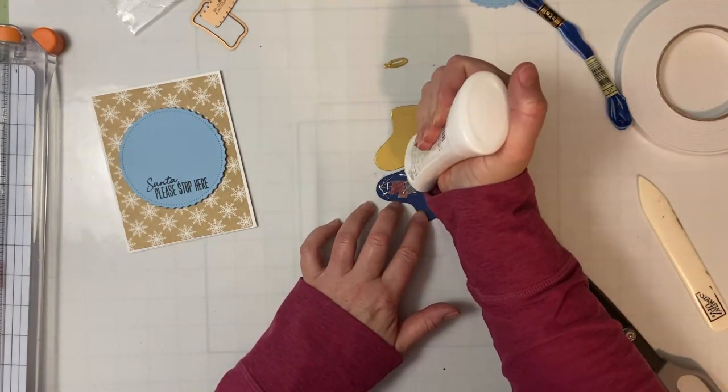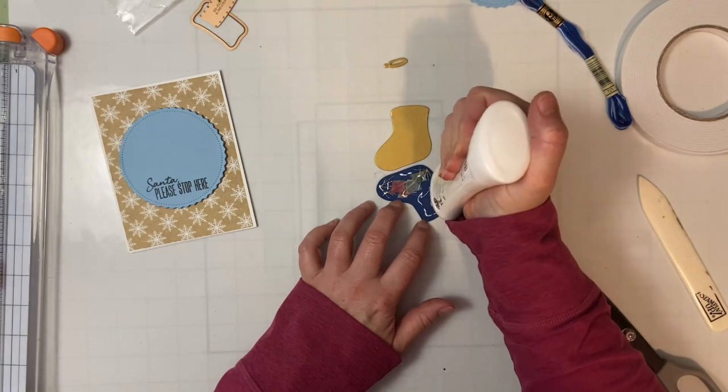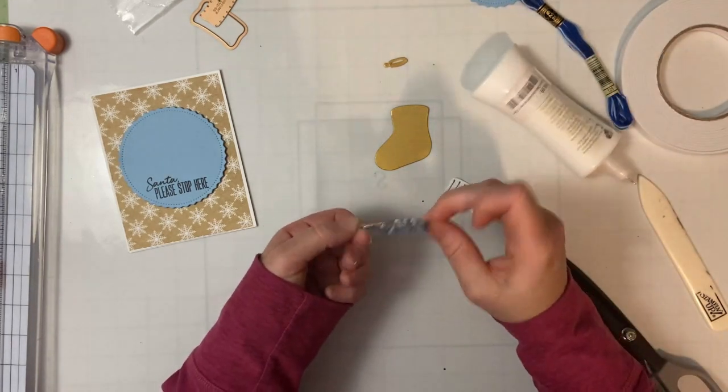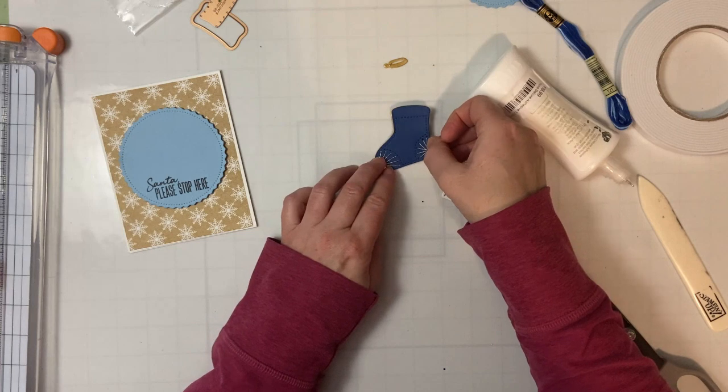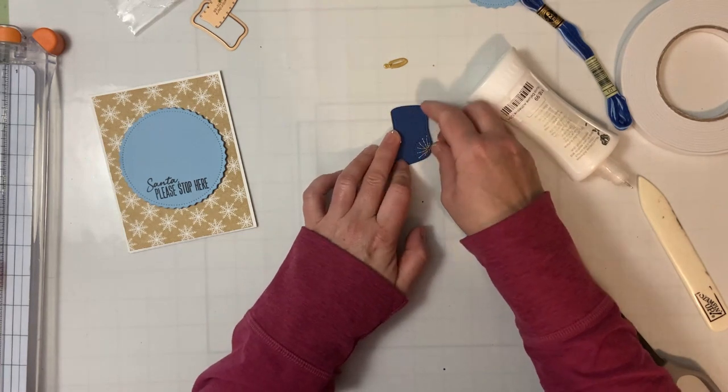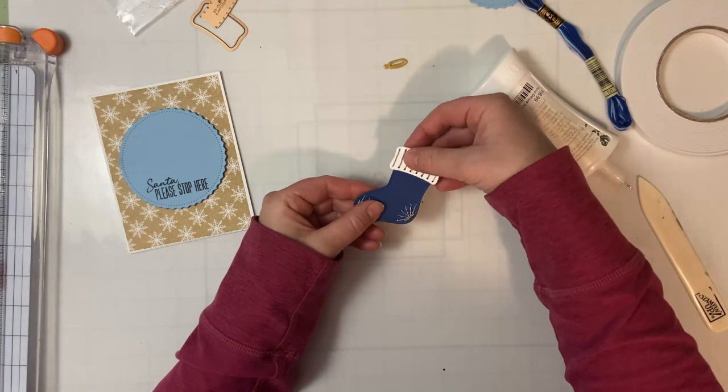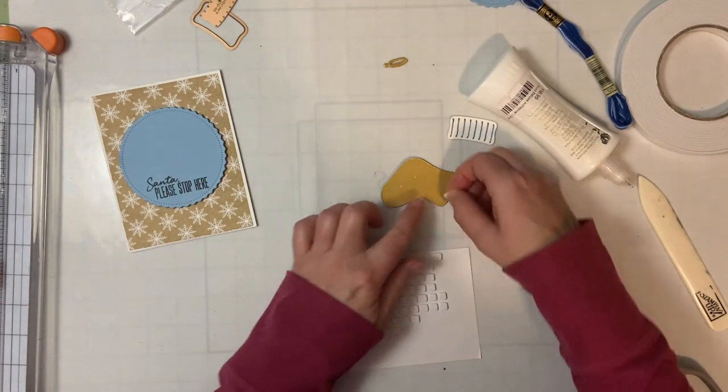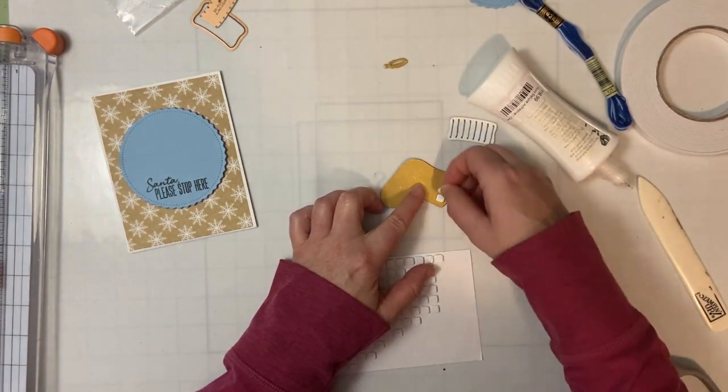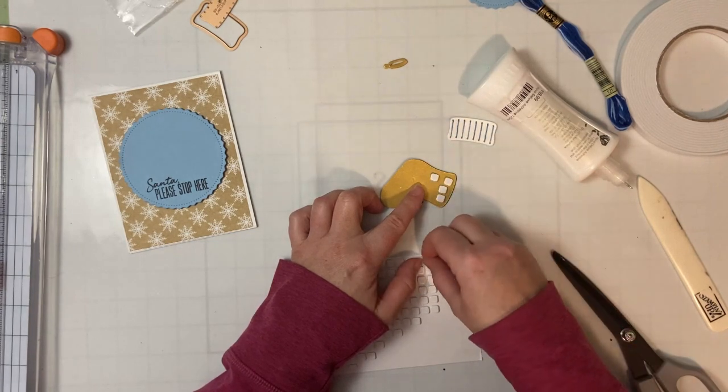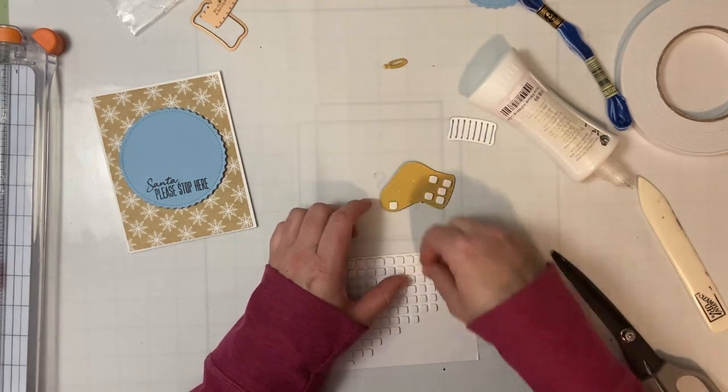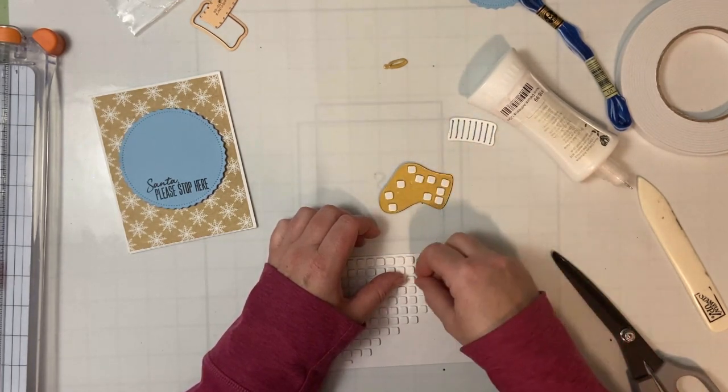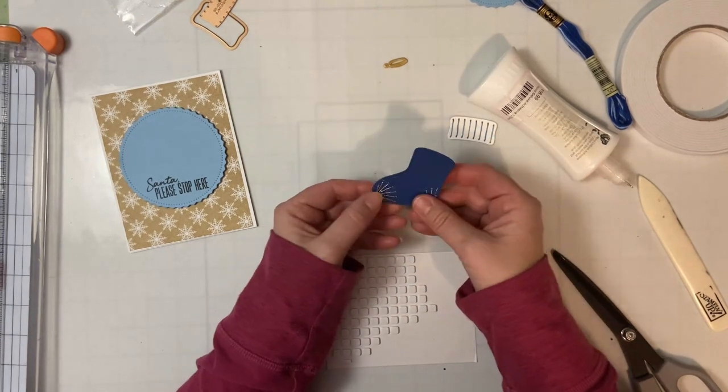So I think I will just use some liquid adhesive. I might pop this one down first and then see how it all lines up before I attach the topper and the little guy. In fact I might need to attach him first because he probably should go behind the top bit.